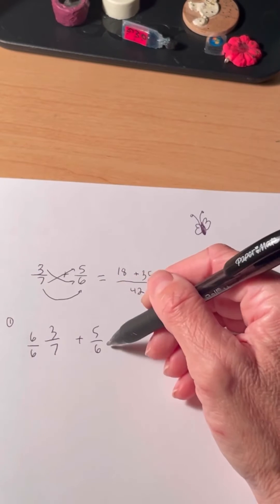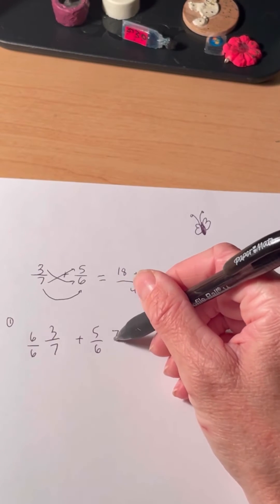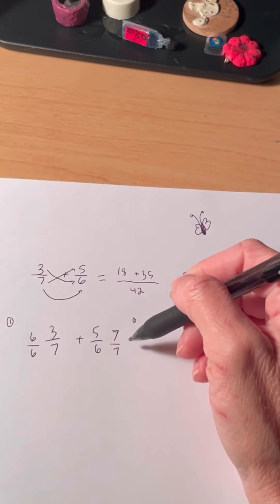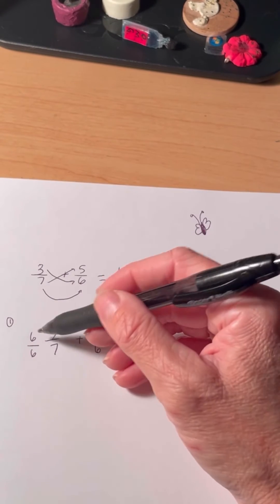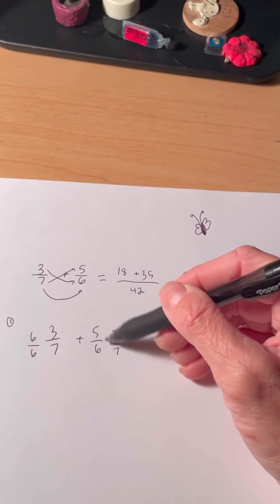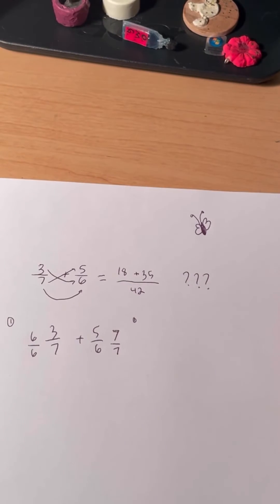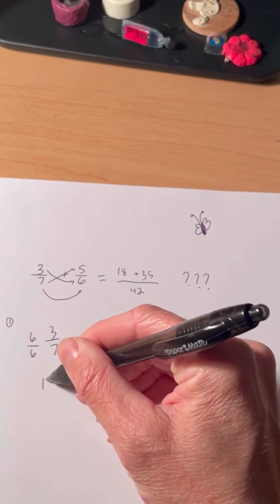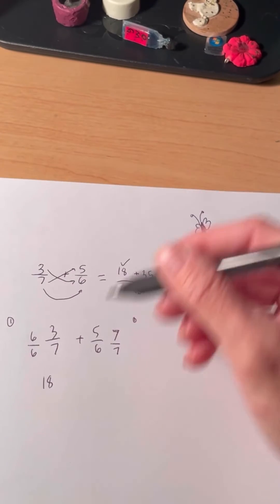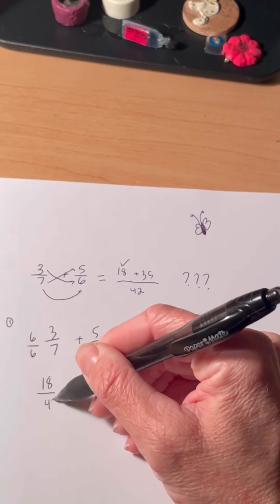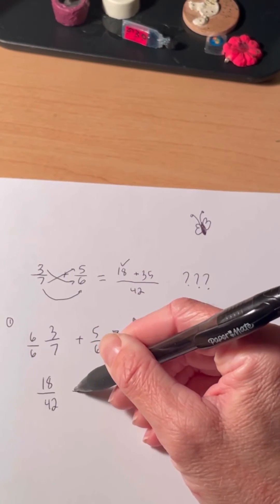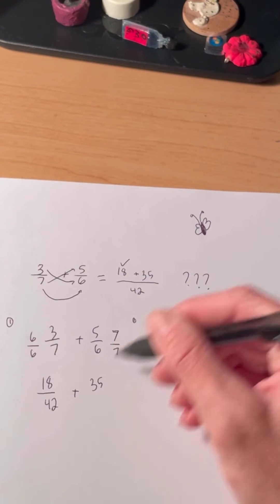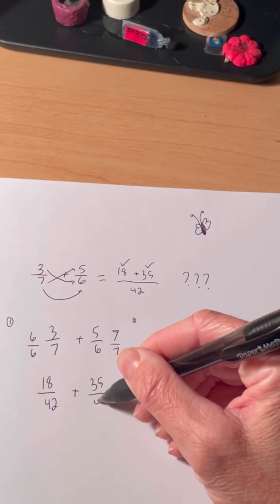And over here, this one's missing a 7. So let's multiply it by 7 over 7, which is also just 1. Now we can see that we are multiplying this by 1 and this by 1, which doesn't change our two fractions. That gives us 6 times 3, which is 18, over 42, plus 5 times 7, over 42.